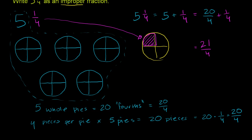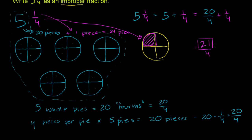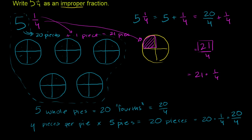This 5 right here is 20 pieces of pie. A quicker way to see this: we have 5 pies, each of them have 4 pieces, so 5 times 4 is 20. This 1/4 right here represents 1 more piece. So in total we're going to have 21 pieces, where each piece is 1/4. So we have 21 fourths — and we've solved the problem. We've written 5 and 1/4 as an improper fraction.